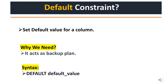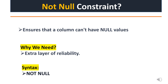The default constraint allows you to set a default value for a column — it's like having a backup plan for your data. If a user doesn't enter a value from the UI, the database will automatically use the default value. The NOT NULL constraint ensures that a column can't have null values, adding an extra layer of reliability and serving as a validation before data is stored.